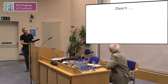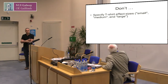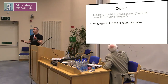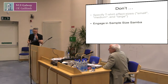I'm going to finish with a couple of don'ts. Don't — this is mainly for psychologists — don't specify T-shirt effect sizes: small, medium, and large. You specify it in the magnitude that's clinically important, decided beforehand. Don't engage in sample size samba — don't use software and keep plugging in values over and back until you get the kind of sample sizes you like. That's called reverse engineering — that's letting the software do the thinking.